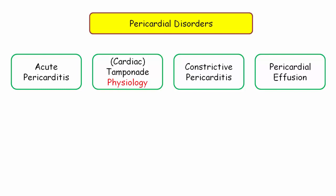Acute pericarditis, cardiac tamponade — and I highlight this is a physiologic derangement. Fluid in the pericardial sac is not the problem; it is the pathophysiologic disturbance caused by that fluid in the sac that forms the basis for tamponade physiology. We'll delve into this further during our presentation. The next player is constrictive pericarditis, and finally we have pericardial effusion.